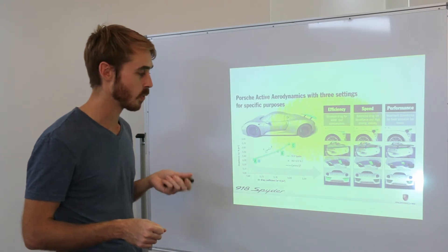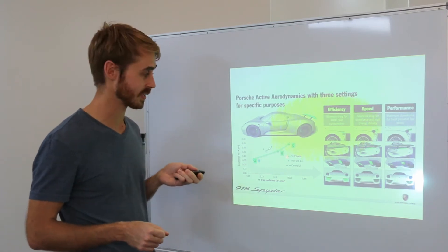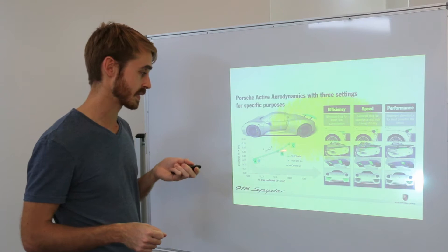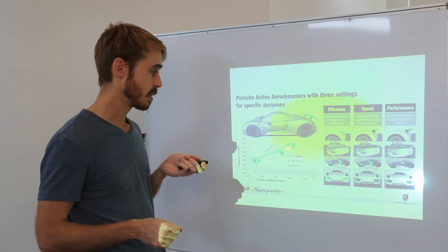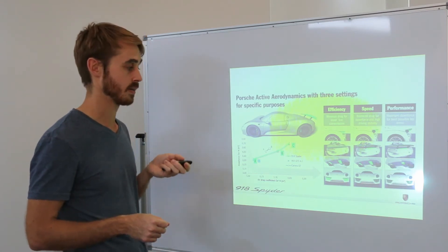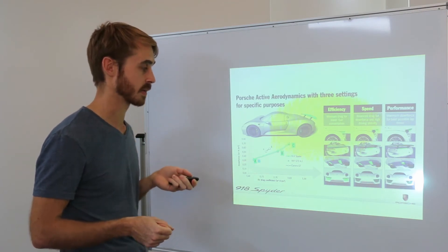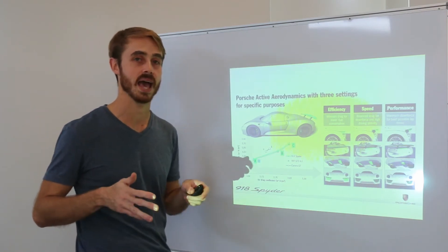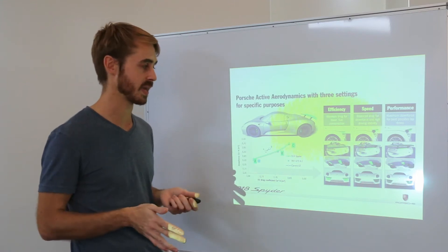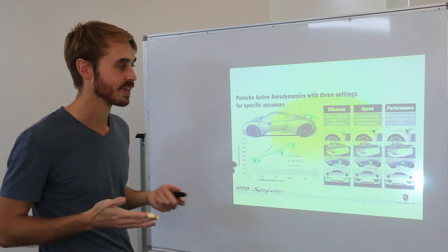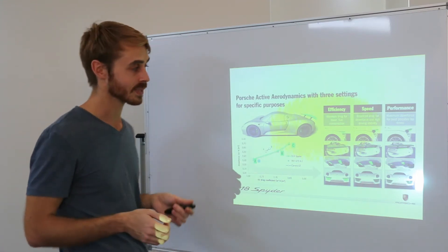Obviously the point they were trying to prove with this graph was that with the active aerodynamics they can configure it so it either has better downforce than the Carrera GT or it has better drag. But the point is that at no point does it have concurrently better downforce than drag, so I thought that was pretty funny.